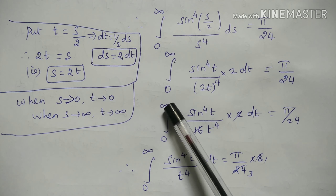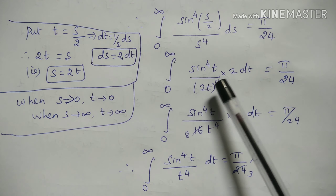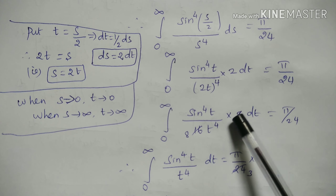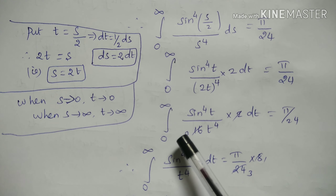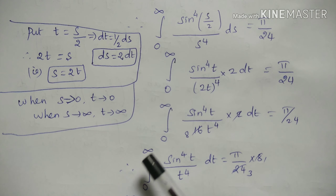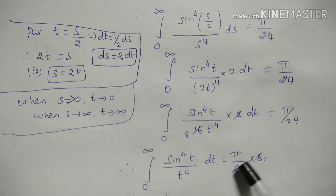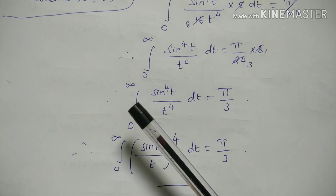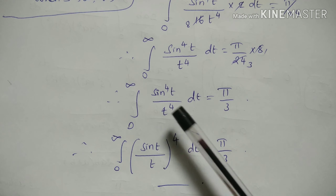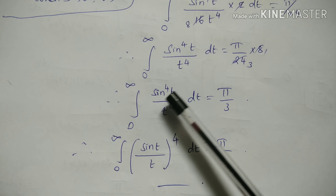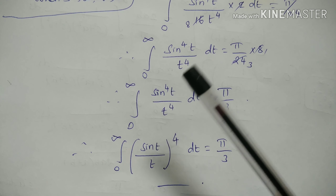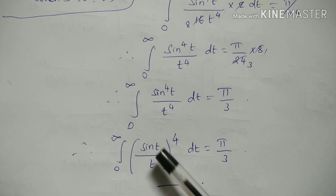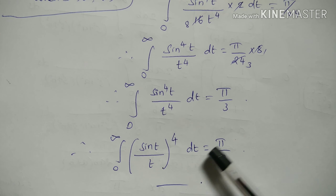Next step: integral from 0 to ∞ of sin⁴(t)/t⁴ dt = (π/24) · 8 = π/3, since 8/24 = 1/3. Therefore, integral from 0 to ∞ of (sin t/t)⁴ dt = π/3.